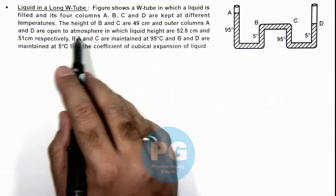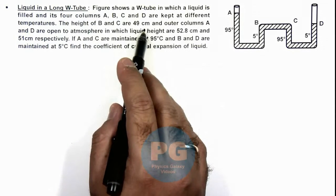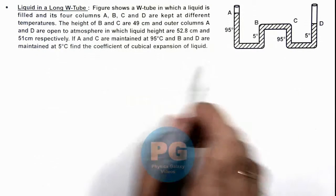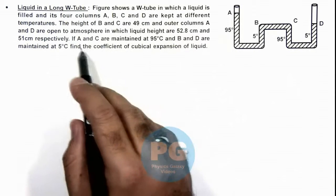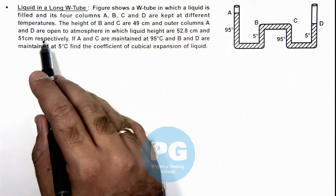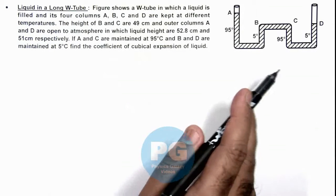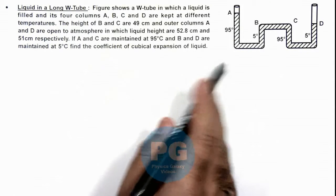It is saying the height of B and C are equal at 49 centimeters, and the other columns A and D are open to atmosphere, in which liquid heights are 52.8 and 51 centimeters respectively. If the temperatures are given here, we are required to find the coefficient of cubical expansion of liquid.